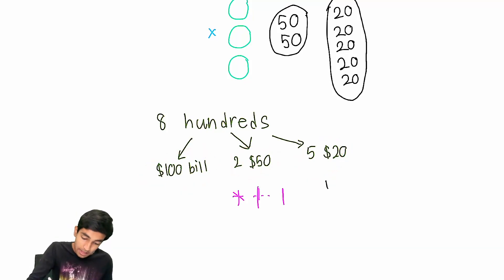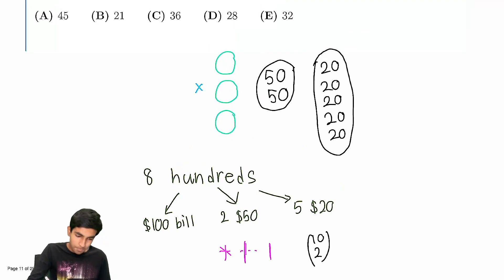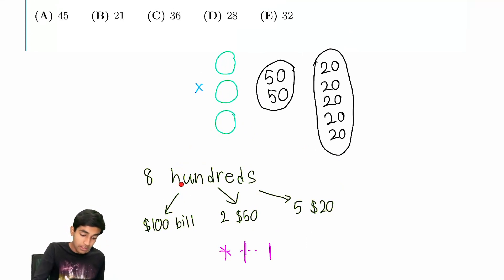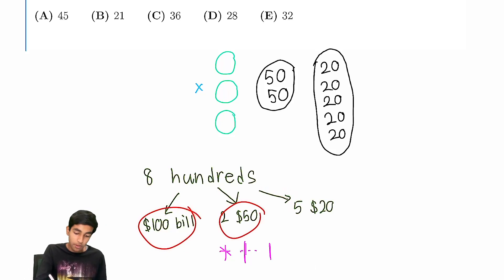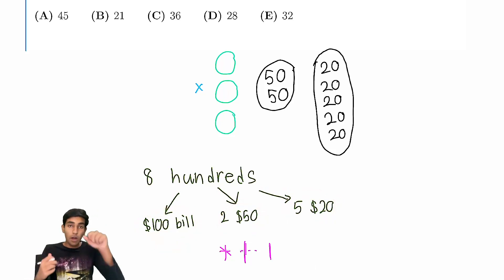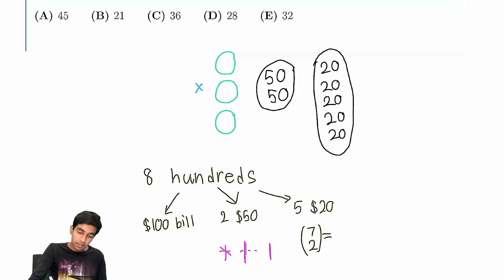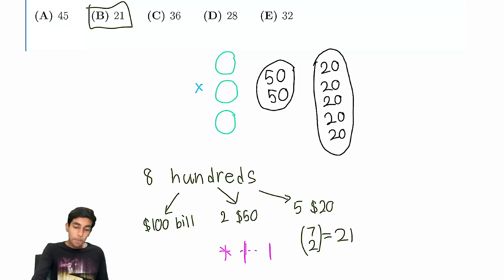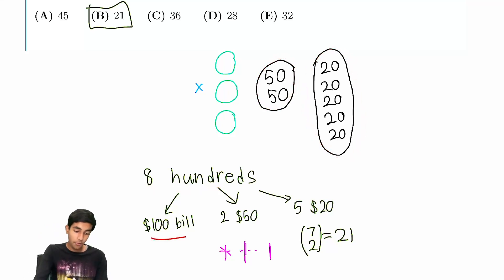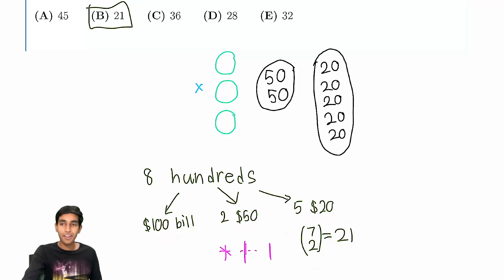Since each class must have at least one, we first assign one hundred to each of the three groups, leaving five remaining. So we have five stars and two bars, giving us 7 choose 2 ways to arrange them. That's 21, which is the final answer. The key idea was realizing that the groups of one hundred must be pure — no mixing of fifties and twenties — and then it's just a routine stars and bars problem.